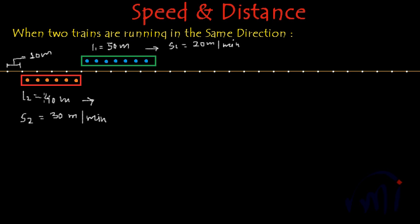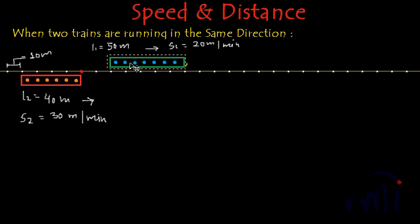The red train is overtaking the green train, so the speed of the green train is naturally less than that of the red train. The trains are drawn in a position where the red train is just about to start crossing the green train — this is the starting point. After one minute, the green train will cover 20 meters and the red train will travel 30 meters, since its speed is 30 meters per minute.